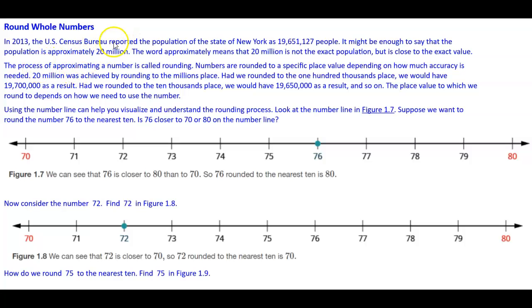The process of approximating a number is called rounding. Numbers are rounded to a specific place value depending on how much accuracy is needed. 20 million is achieved by rounding the millions place. Had we rounded to the 100,000 place, we would have 19,700,000. Had we rounded to the 10,000 place, we would have 19,650,000, and so on. The place value to which we round depends on how we need to use the number.